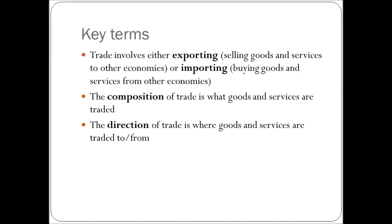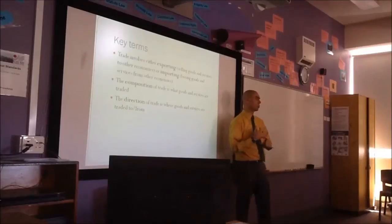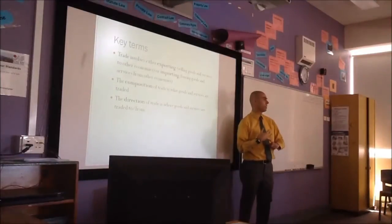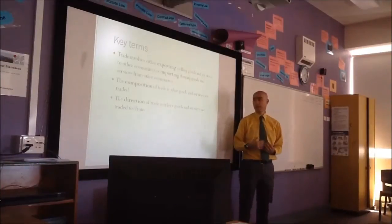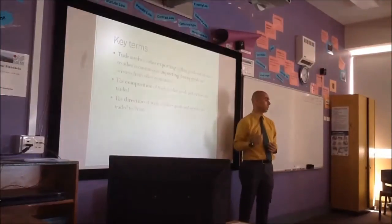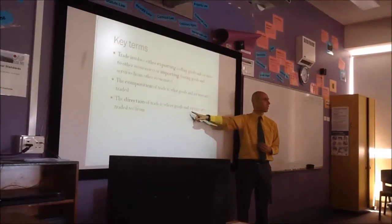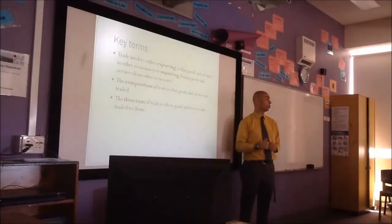The composition of trade talks about what goods and services are traded, whereas the direction of trade is where goods and services are traded to and from. Australia exports mostly primary resources — wheat, iron ore, coal — and we import mostly manufactured goods. That's the composition of trade: what goods and services are exported and which ones are imported. I have told you nothing about the direction — which countries they come from or which countries they go to.